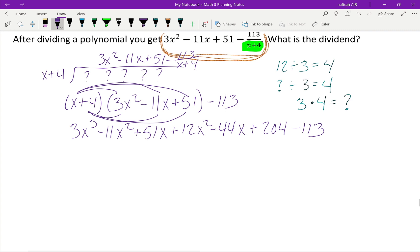Once I combine all of my like terms, I would get that the original polynomial must have been 3x³ + x² + 7x + 91.